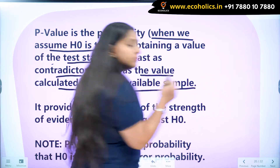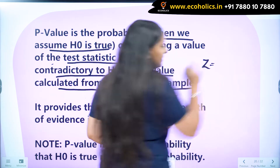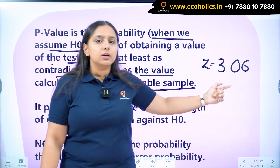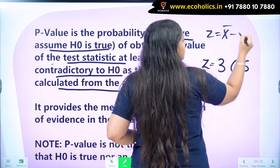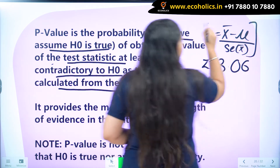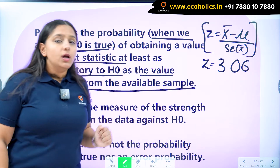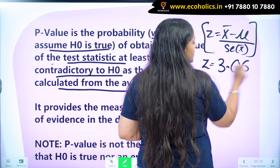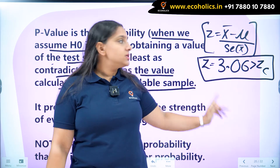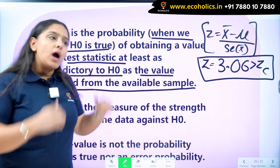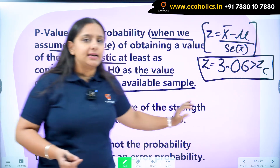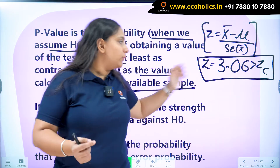So if I calculate my test statistic which comes out to be 3.06, and I calculated this test statistic for my mean, it came out to be 3.06. Now this 3.06 is greater than the Z critical value. So I decided to reject my null hypothesis because this Z value is lying in the rejection region. I started my hypothesis with the belief that the given null is true, but when I calculated my test statistic, I came to know that it lies in the rejection region, so I am going to reject it.